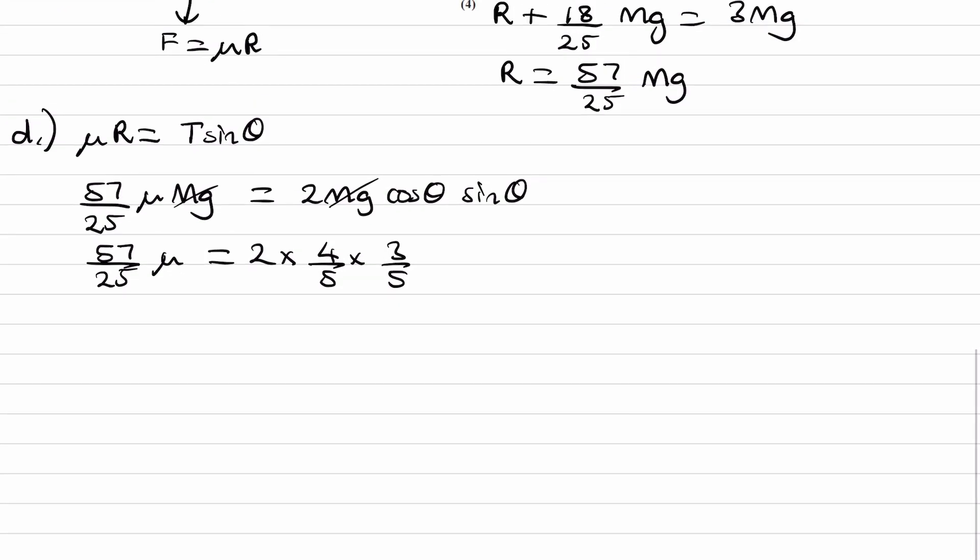We can just simplify. So cos theta is 3 over 5, sin theta is 4 over 5. These will cancel with the 25 on the bottom. I can also divide by 3. This becomes 1, this becomes 19. So we end up with mu equals 2 times 4 on the right is 8. Bring the 19 over, 8 over 19, which is what we wanted to show.